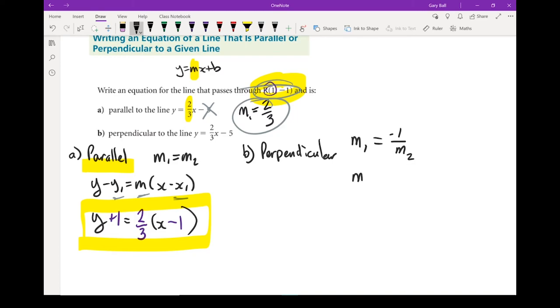If m1 equals two-thirds, then m2, I'm going to flip it, becomes 3 over 2 and the opposite sign. It was a negative, it now becomes, or sorry, it was a positive and it now becomes a negative.